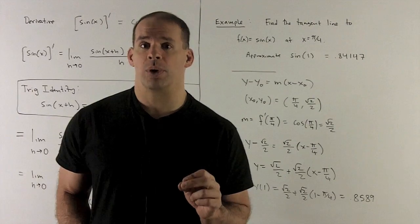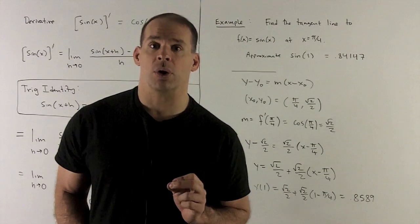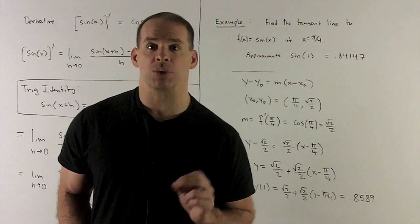Then to get our slope, we're going to take the derivative of sine and then put pi over 4 into there. Derivative of sine is going to be cosine. We just saw that. Putting pi over 4 in there is just going to give me square root of 2 over 2.